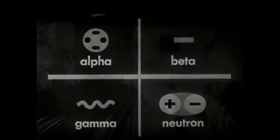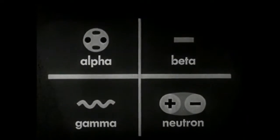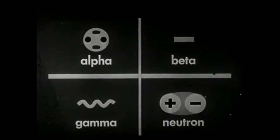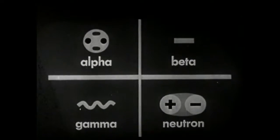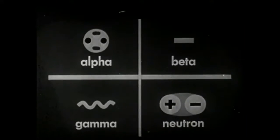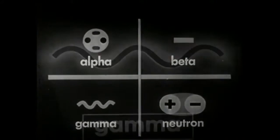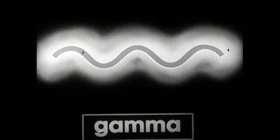Sometimes the scientist wishes to observe the effects of the radiations themselves. Alpha particles, beta particles, gamma rays, and neutrons are some of the most familiar kinds of radiation. Gamma rays are particularly useful in the study of living things.